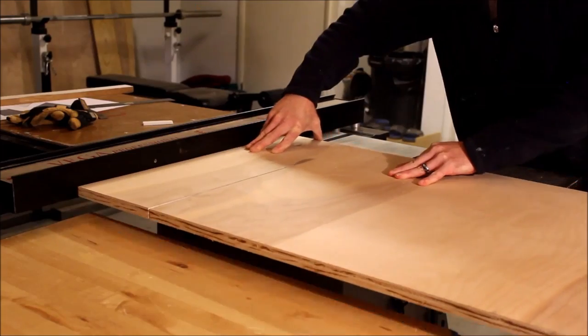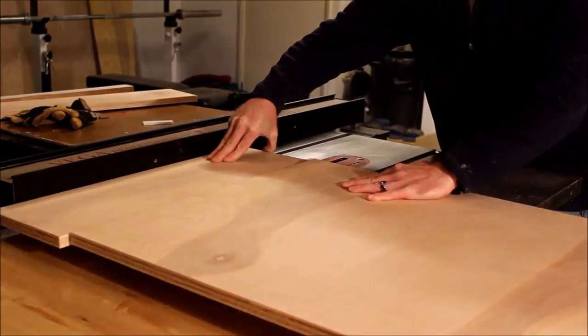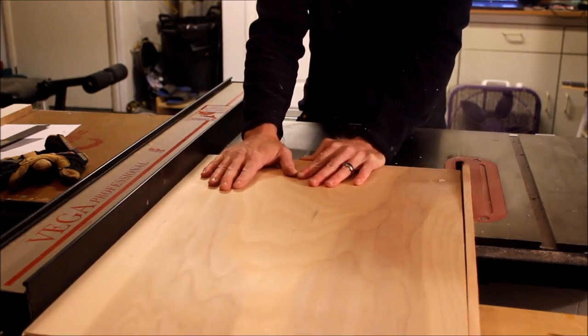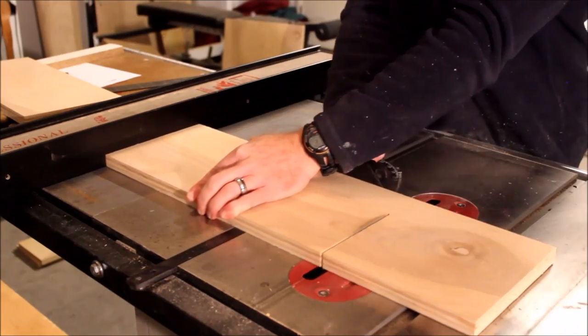Make it easier on yourself and have the big box store cross cut the birch plywood at 28 inches. Start with cutting three quarter inch plywood for the French cleat, carcass body and the drop down front.